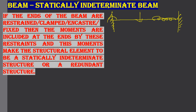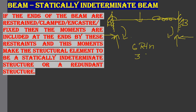When loads act on such a beam, taking the left support as A and the right support as B, the reactions at A will be a vertical reaction, a horizontal reaction, and a moment. Similarly at B, there will be a vertical reaction, a horizontal reaction, and a moment. So totally we have six unknowns and only three equilibrium equations are available. Therefore the statical indeterminacy becomes three — we need three additional equations to determine the unknowns. That is why such a beam is a statically indeterminate beam.